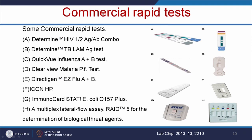These are some examples of commercial rapid test kits. For example, we have kits for HIV, TB, influenza, and malaria. These various paper-based test kits are commercially available in the market.